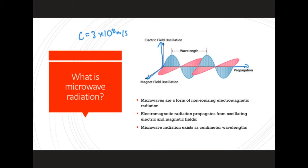Electromagnetic radiation is often characterized by its wavelength. Its wavelength, as you can see here, is the distance from peak to peak of either an electric field or magnetic field. This wavelength can be related to its frequency by: wavelength equals c, the speed of light, over the frequency.